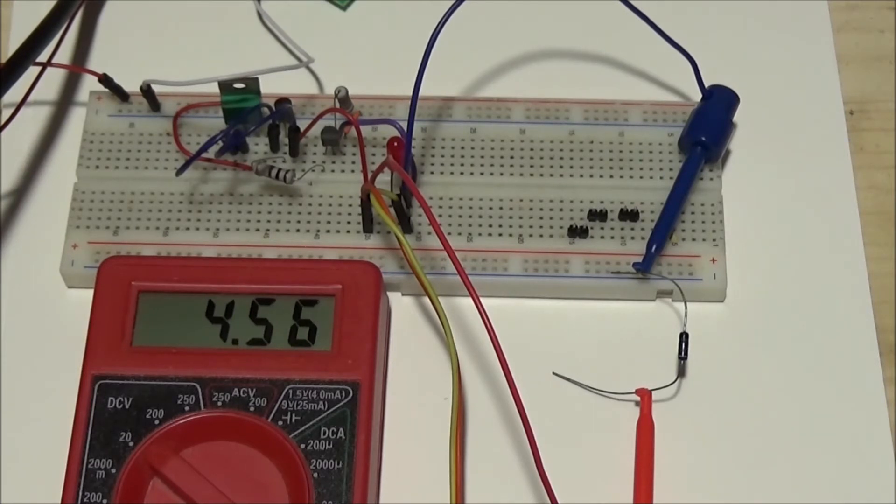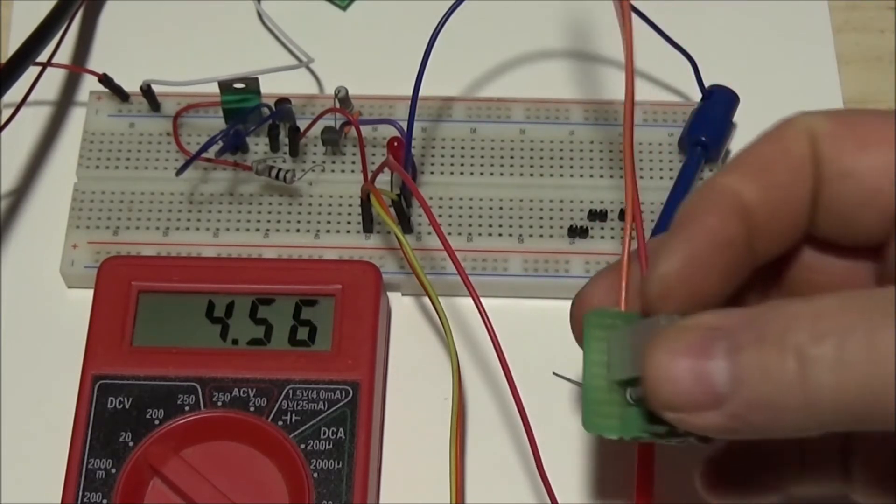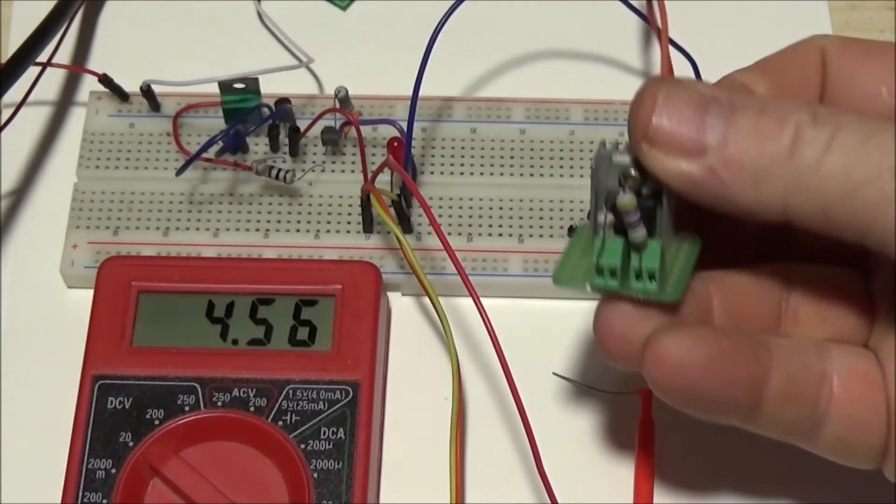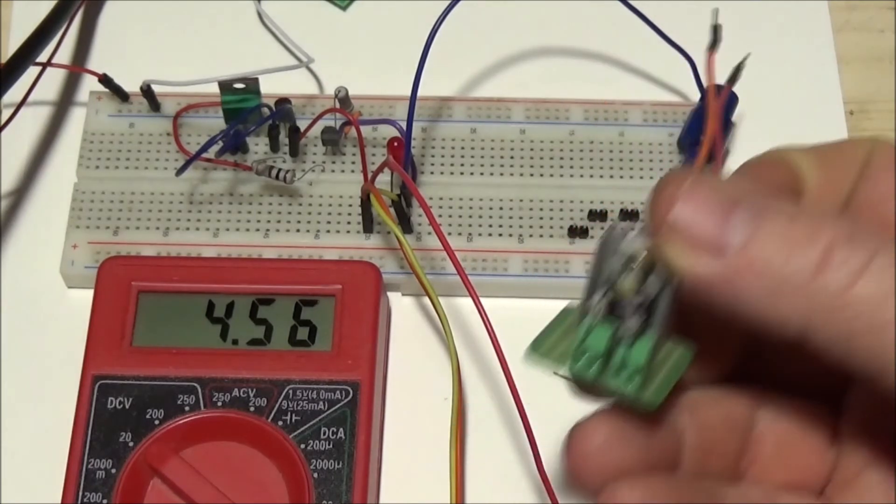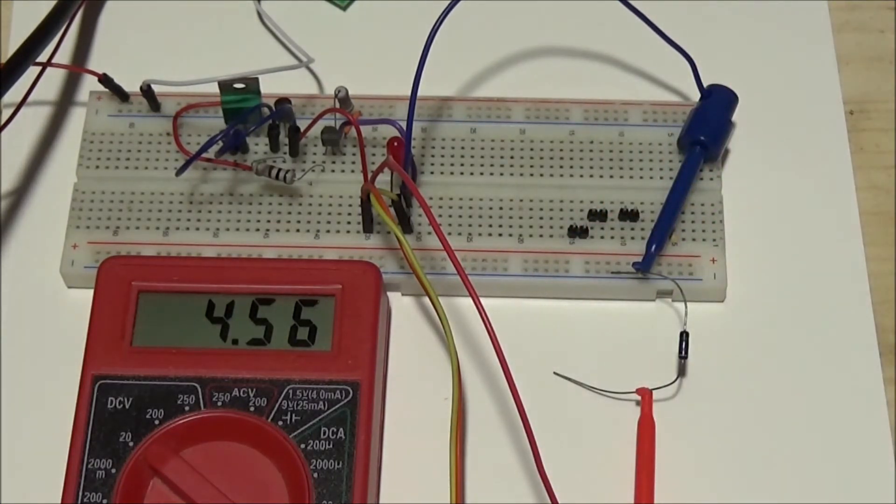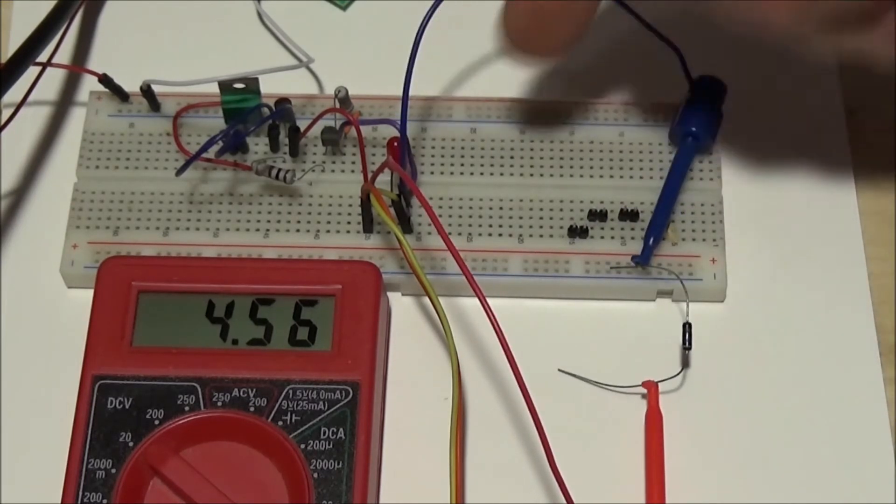So you can use an LM334 or you can use an LM317. This one's set up for around 24 milliamps. And this one happens to be 23 based on a 2.7 ohm resistor.